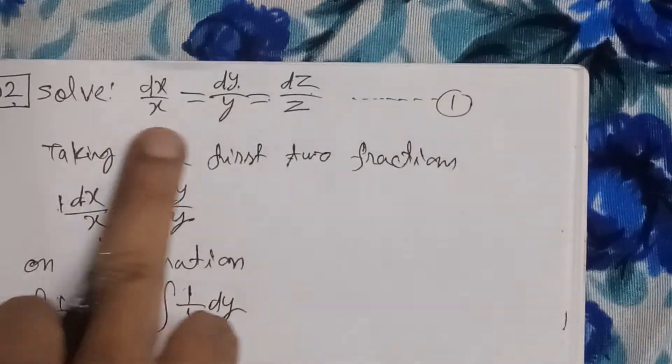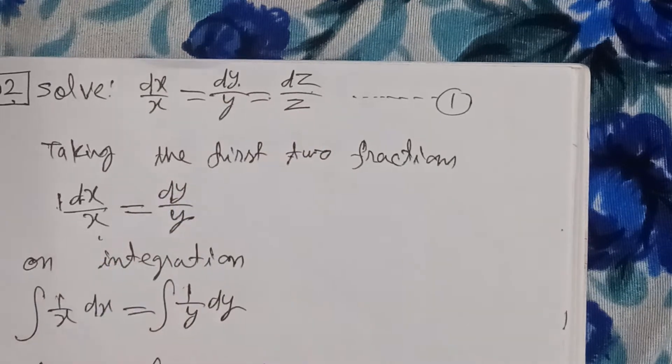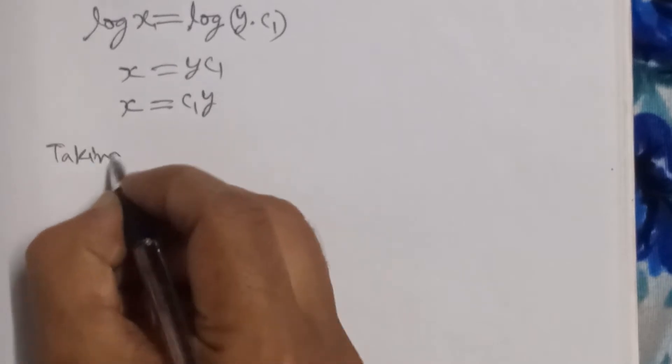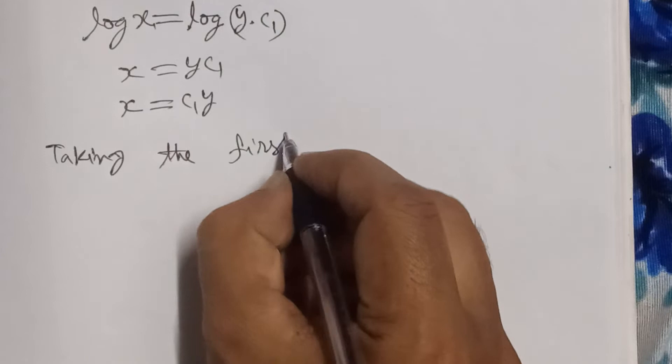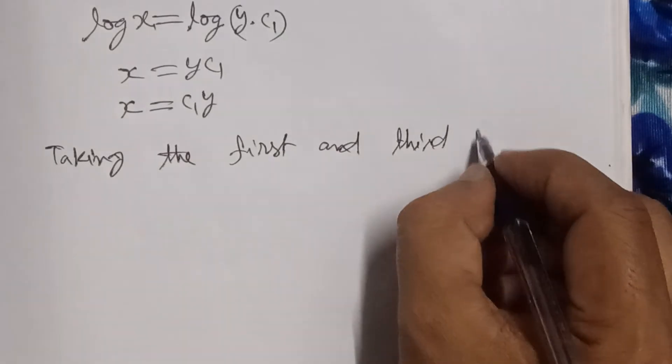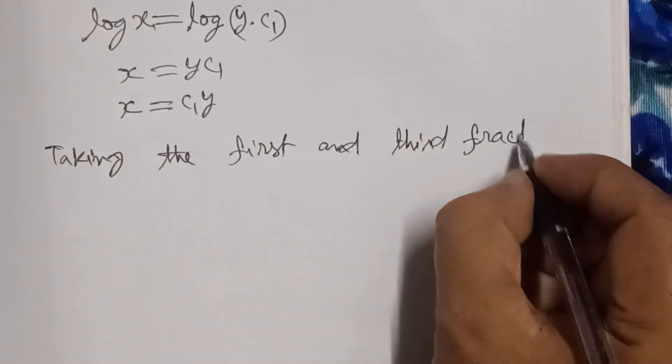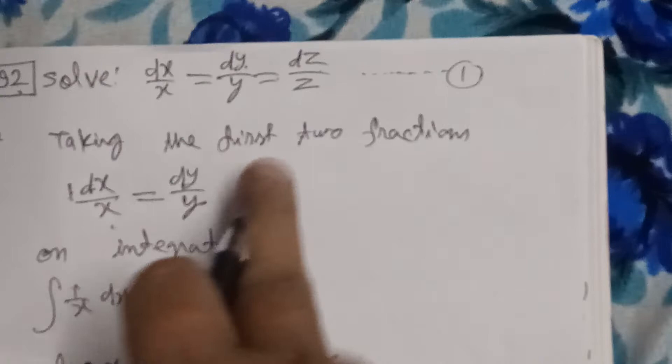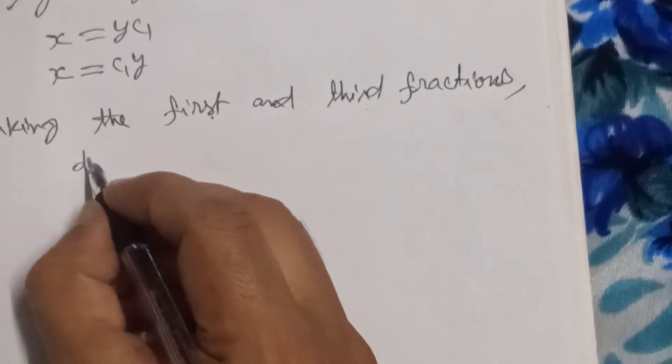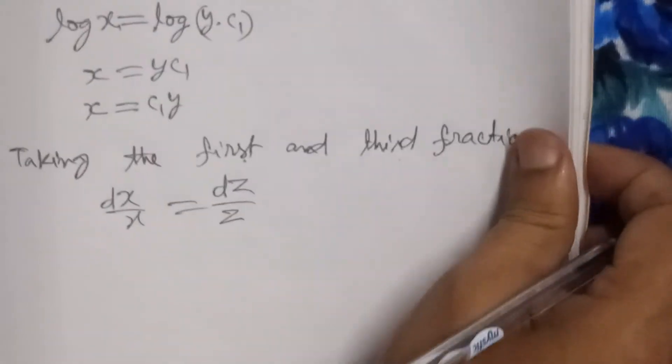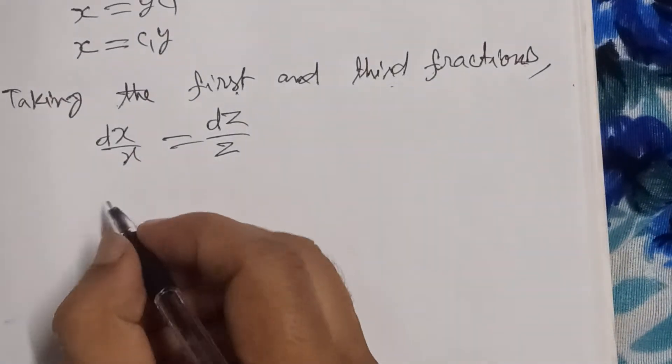Now, taking the first and third fractions—it is not necessary to take the first and third; we could take the second and third as well, but here we take the first and third. So we write dx/x = dz/z and integrate.